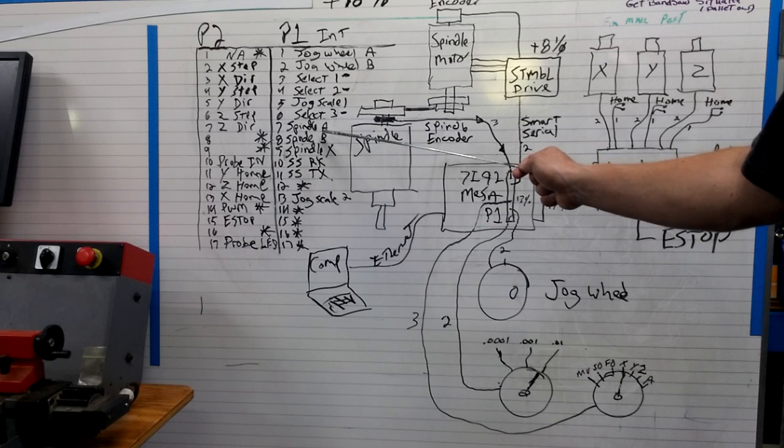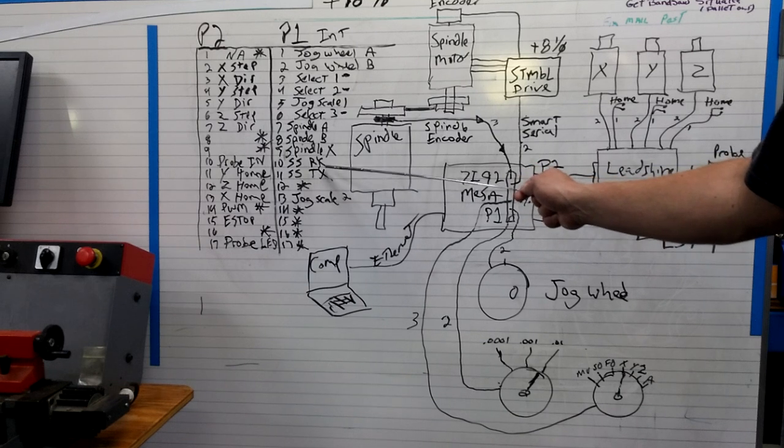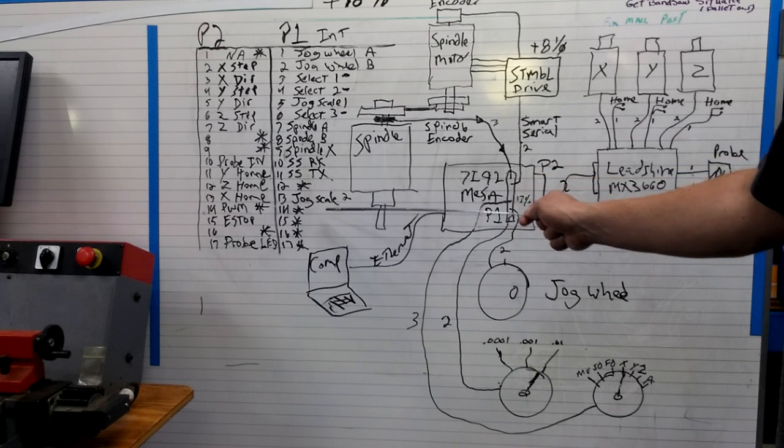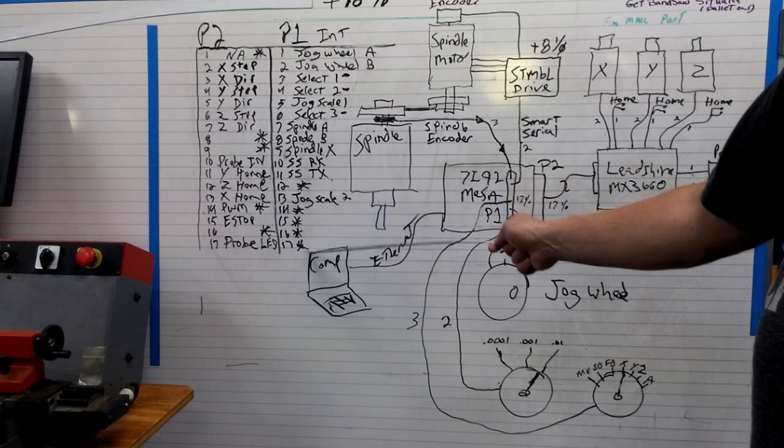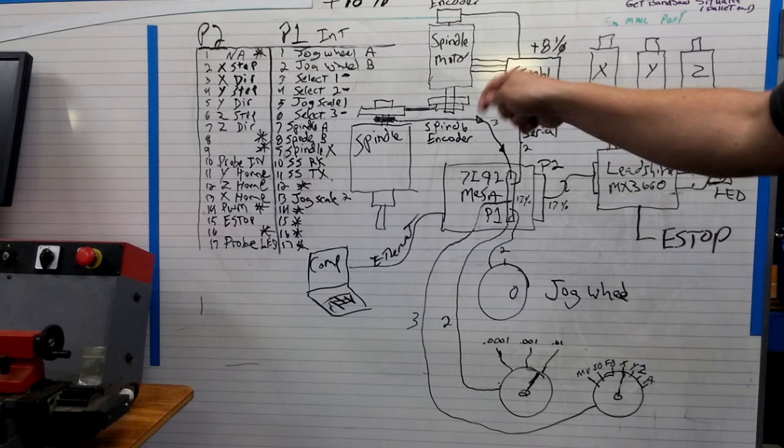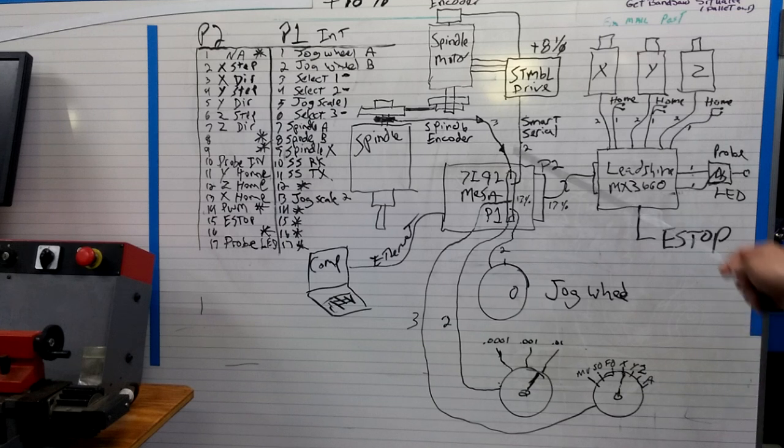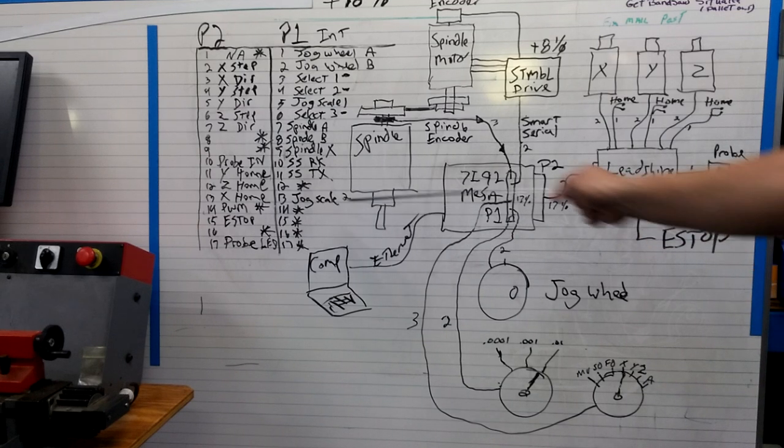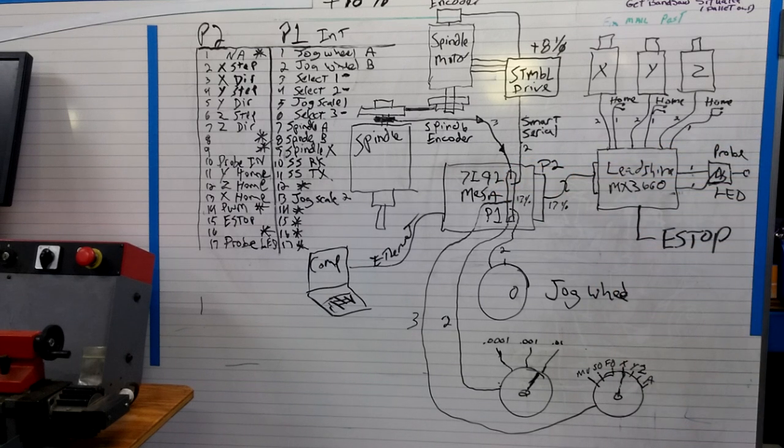And then we have spindle A, B and X encoder, smart serial receive and transmit, and I already did jog scale two. So port two has 1, 2, 3, 4, 5 open IO also. So I have 10 IO that I can still use, plus eight on the stumble drive. I mean, if all else failed and I needed a whole bunch, I could use another, I could turn some of these pins into smart serial ports and add more cards to this setup. Like I say, it's really flexible.